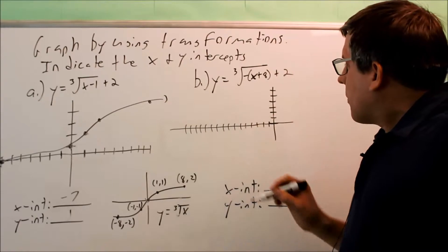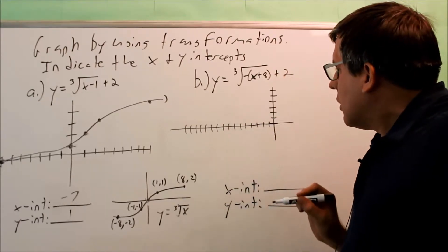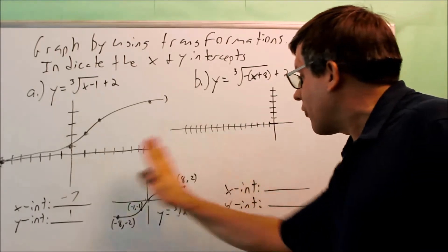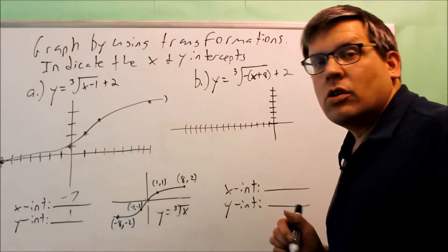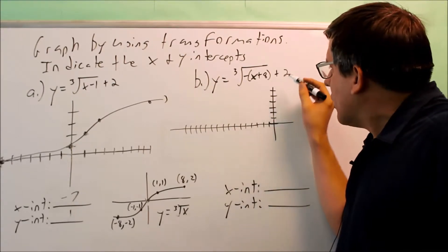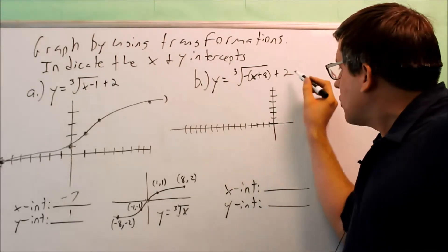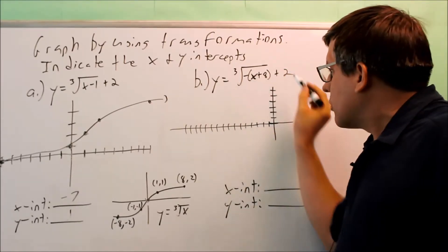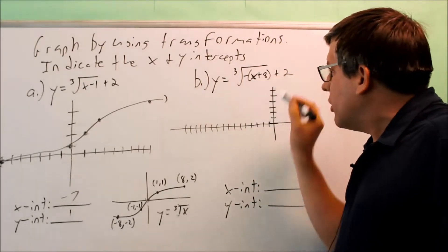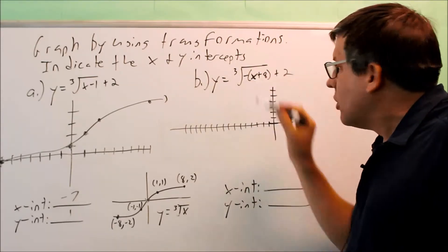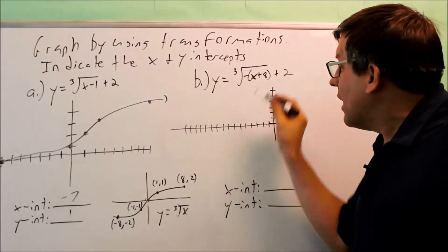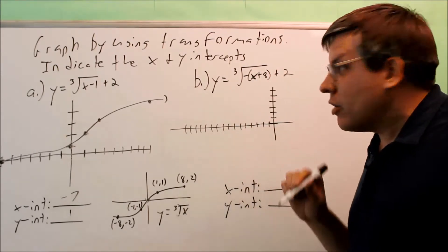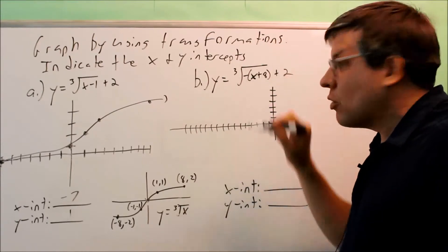Now I want to look at this one. This one has a flip going on — there's a negative on the inside. Any time you have a negative on the inside, that does a flip over the y-axis in this direction. But first I need to move it eight places to the left and up two. Notice that I'm working with what's inside the parenthesis. You don't want to multiply the parenthesis out and distribute the negative. You want to leave it in this form, with the negative on the outside and x having a coefficient of one.